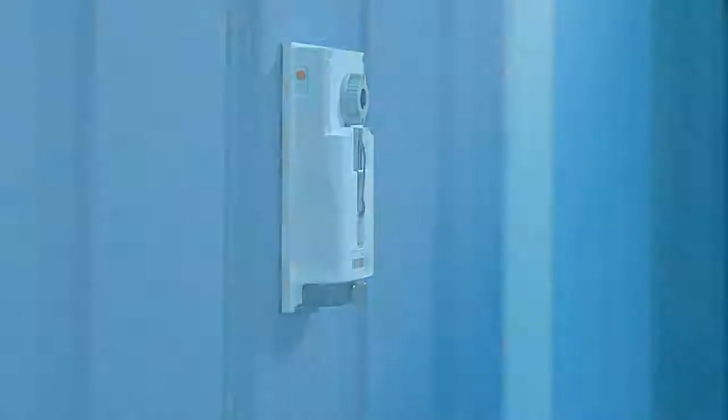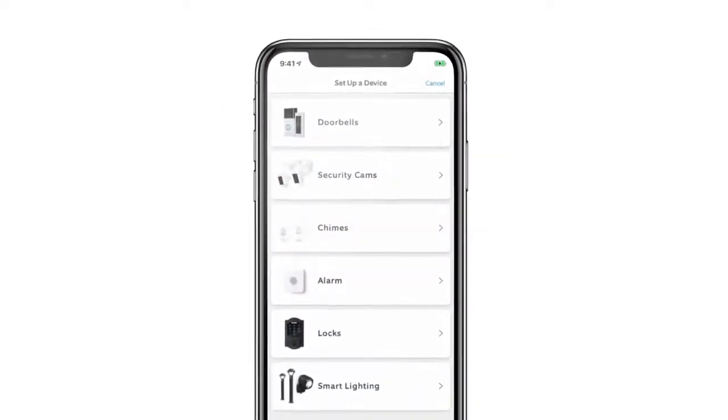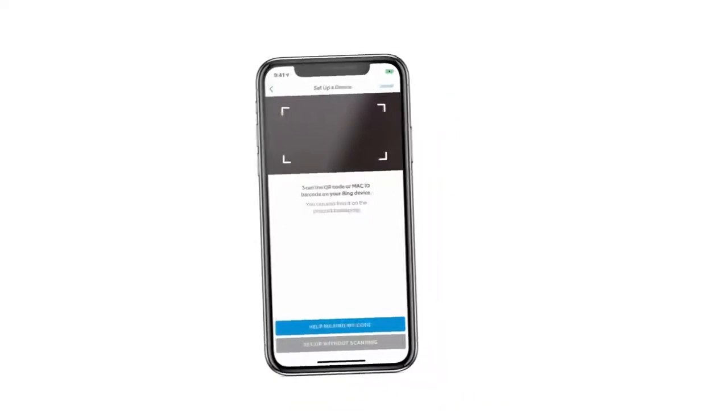To set up your peephole cam, open the Ring app and tap Set Up a Device. Then choose Doorbells and follow the in-app instructions to complete setup.